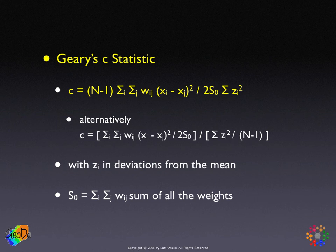The denominator is actually the unbiased estimate of the variance. In Moran's I, recall, you divide the sum of squared deviations by n — the number of observations — which is a consistent estimate. Here in Geary's C, we divide by n minus 1, which is an unbiased estimate. Obviously, for large datasets, this is not going to make any difference.